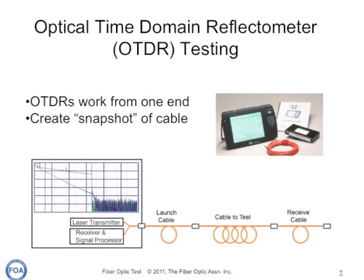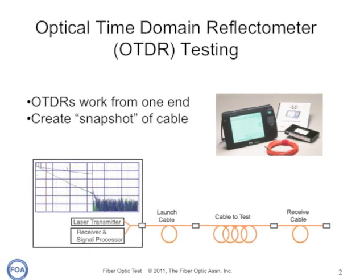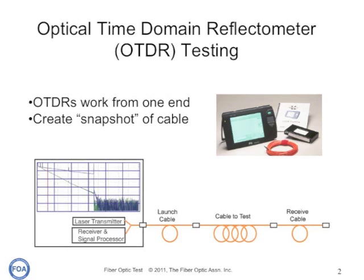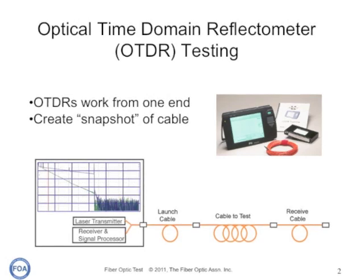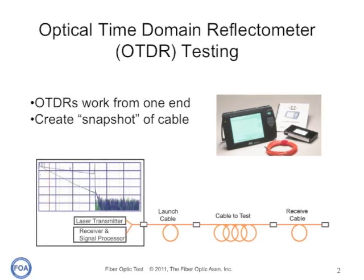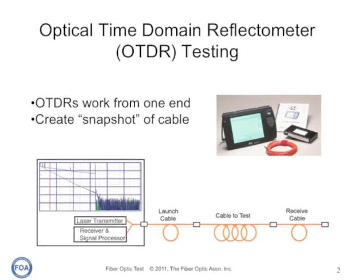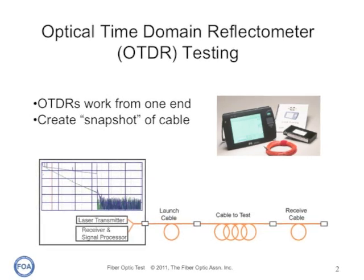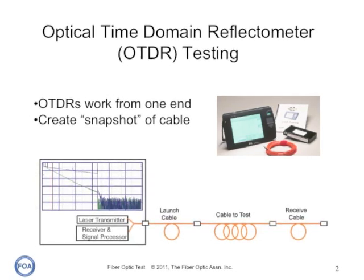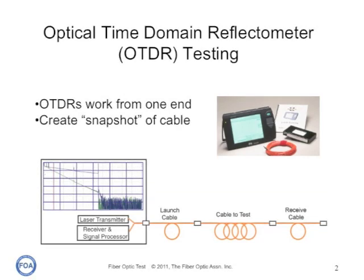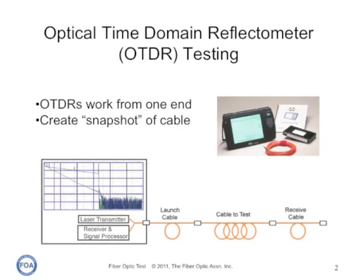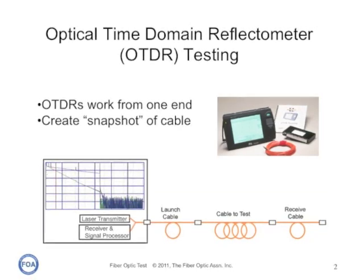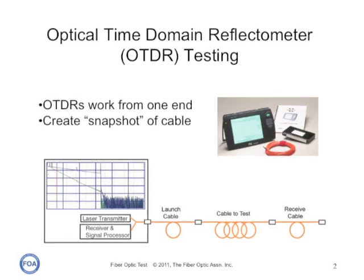As we mentioned in lecture 17, OTDRs are very valuable instruments for fiber optic testing. They're convenient because they work from one end of the cable, and they create a snapshot of the cable. You use that snapshot, or what we call the trace, to analyze the cable plant as you're testing it, and you also save it for later analysis in case you need to do troubleshooting.